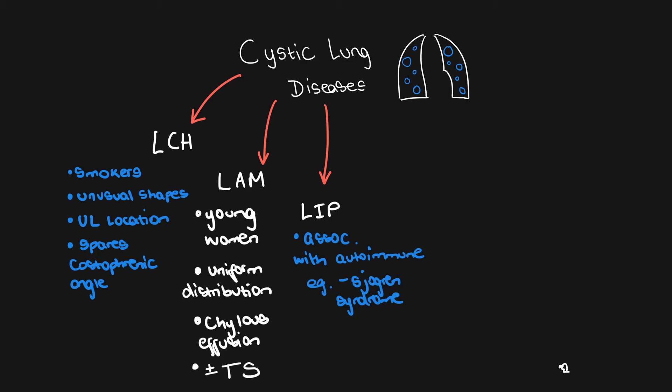The next differential to think about is Lymphocytic Interstitial Pneumonitis, or LIP. This has slightly less specific appearances than LAM and LCH, but clinically it's associated with autoimmune diseases like Sjögren's syndrome. You can also get ground glass change and reticular nodular opacification with this disease.